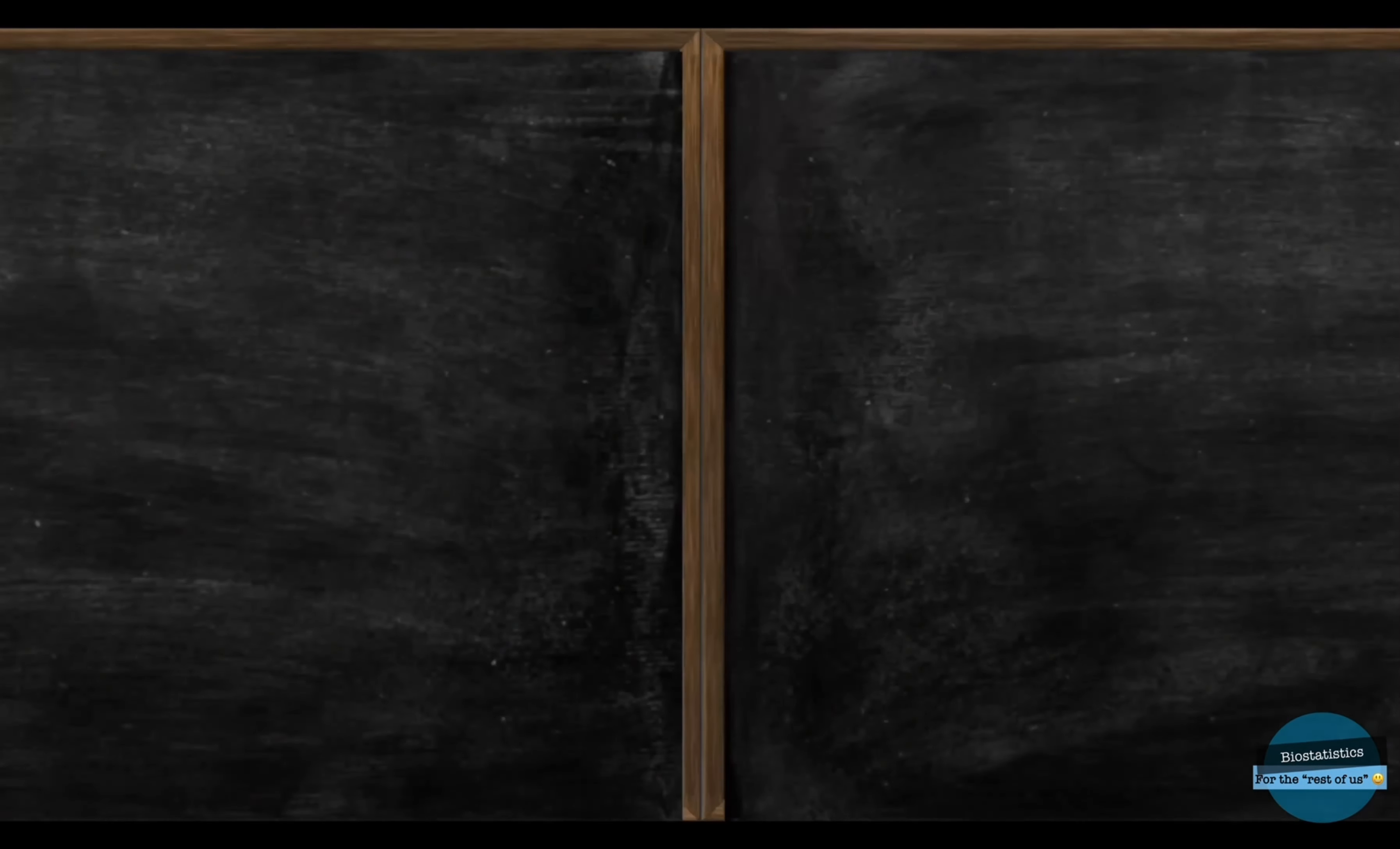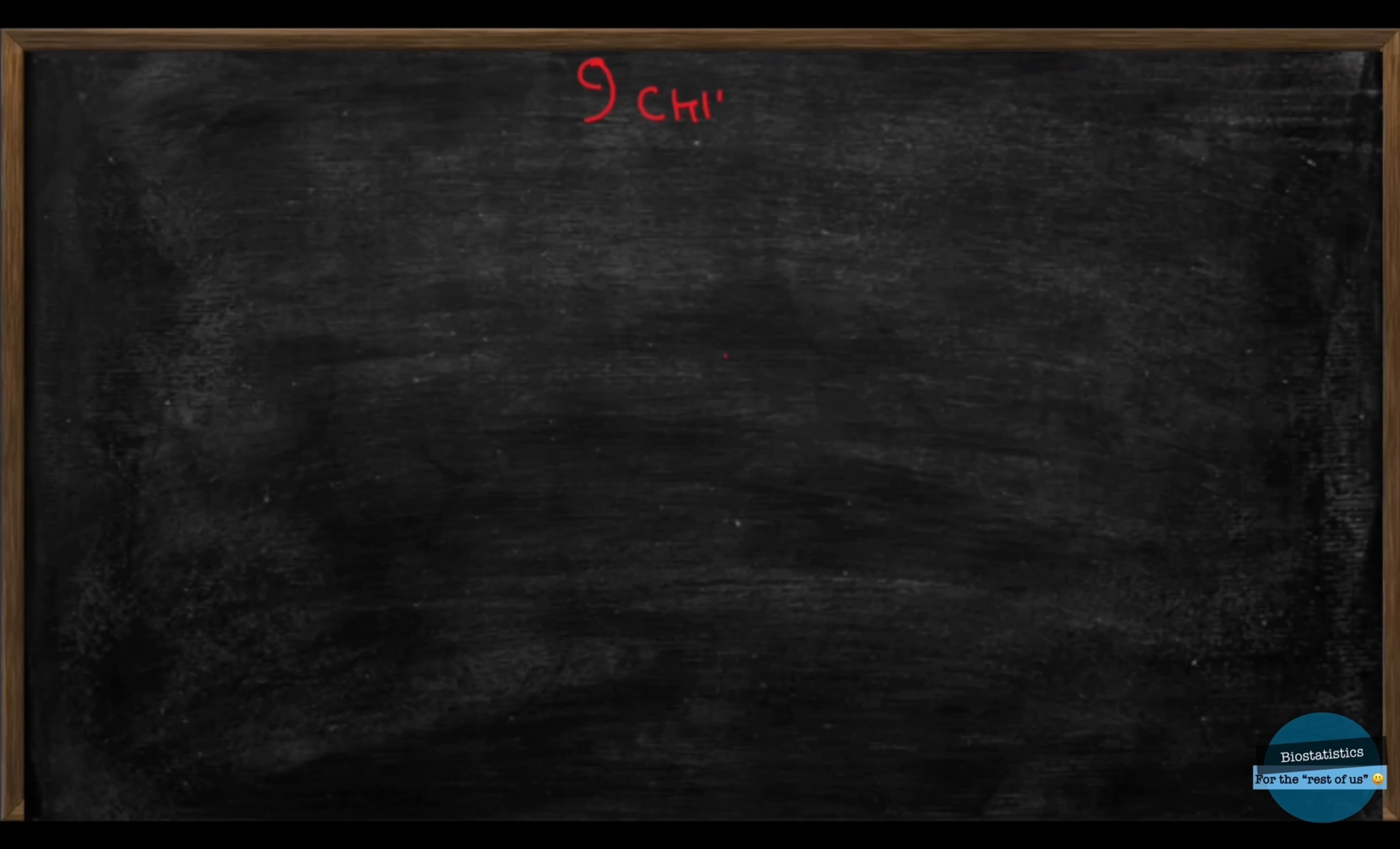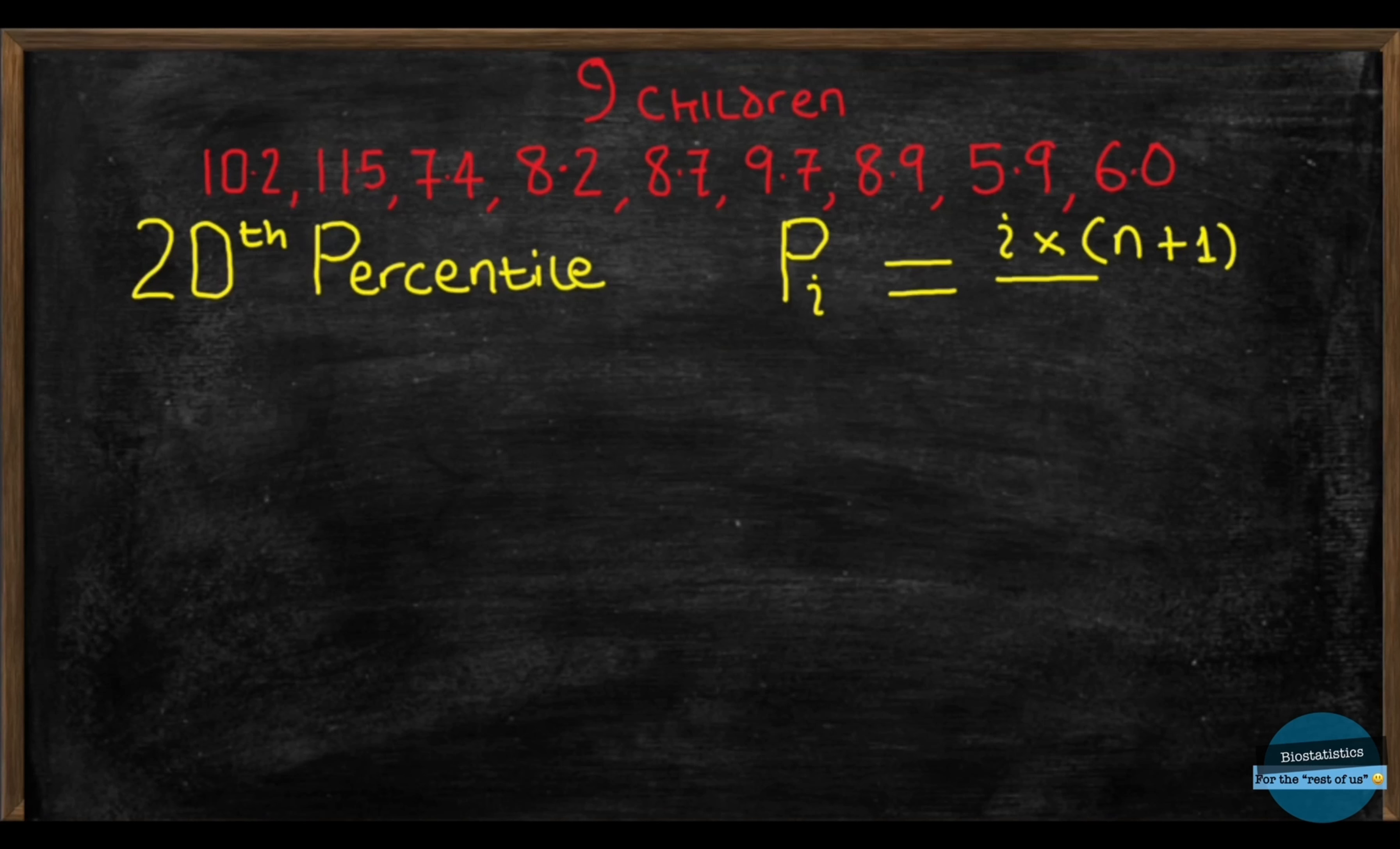So, let's take this formula for a spin, shall we? This is data of weights of 9 children from a nutritional clinic of a comprehensive health center in Zaria, Nigeria. Now, let's find the 20th percentile. Using this formula, the first thing to do is to sort the data in ascending order.